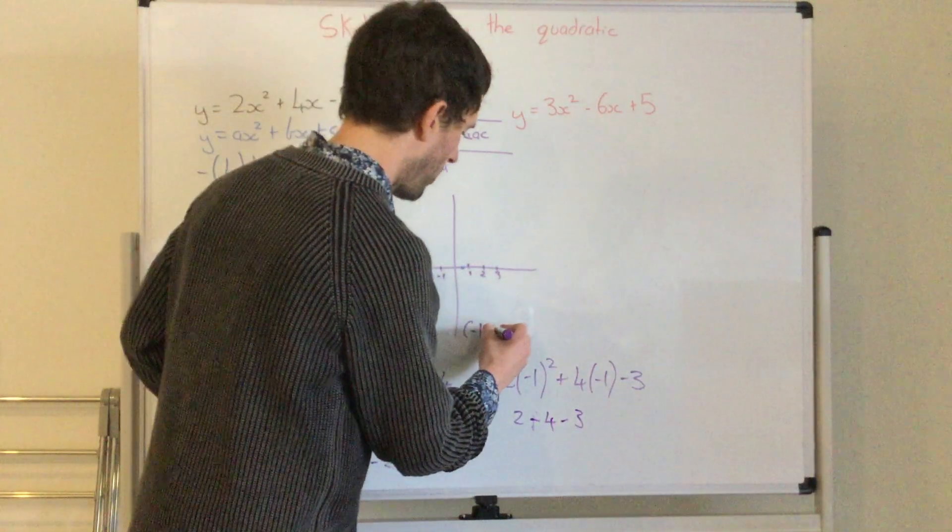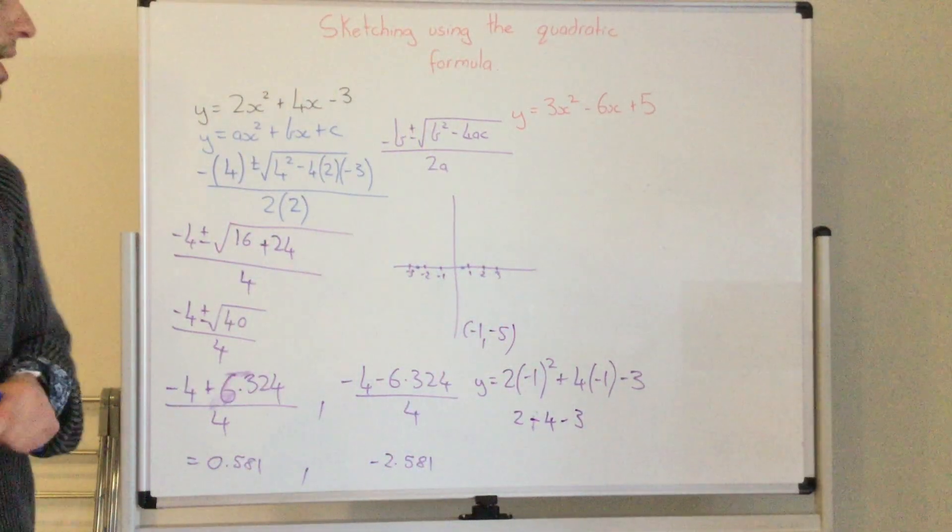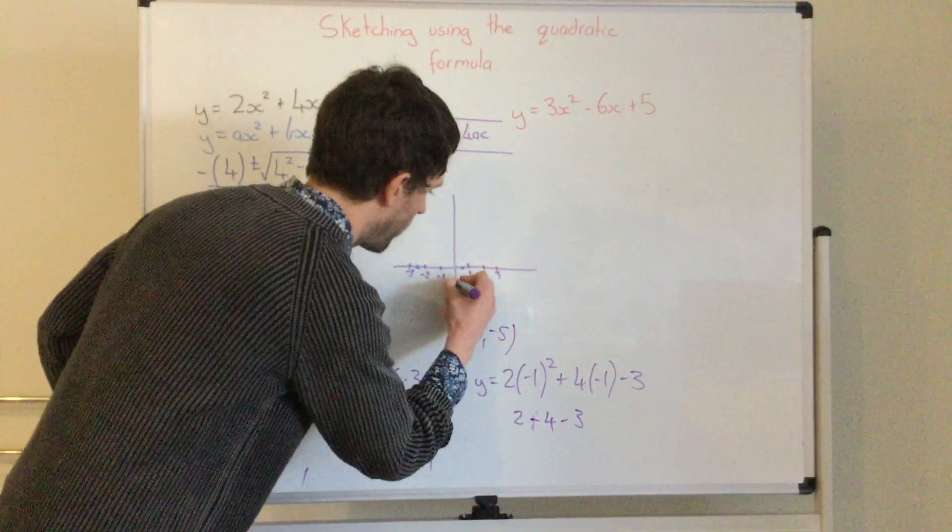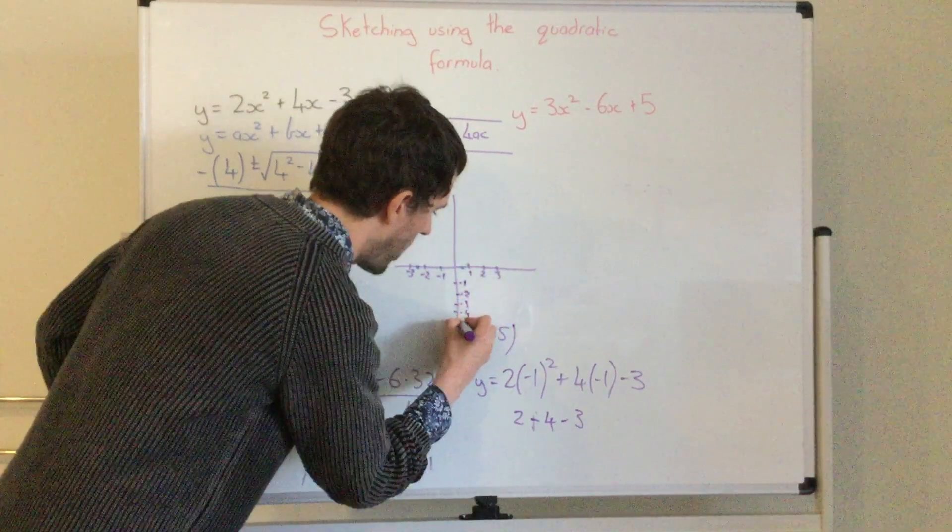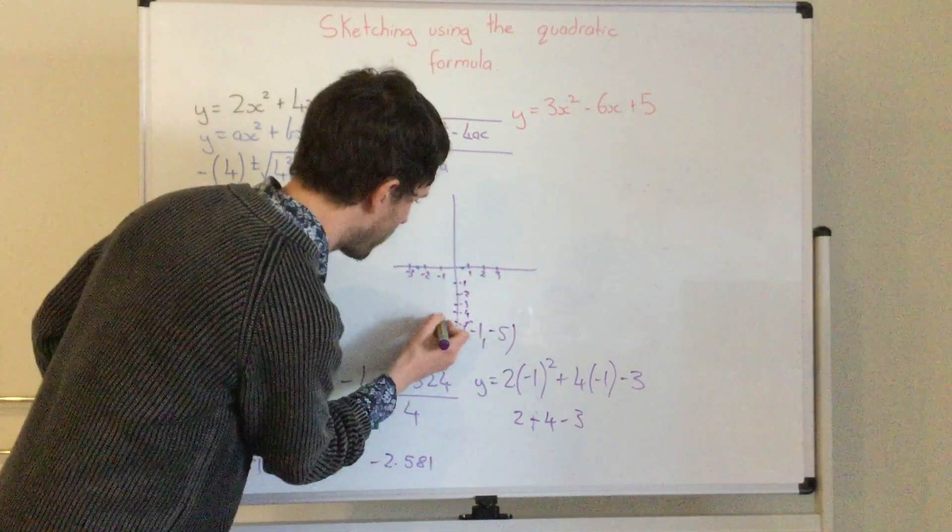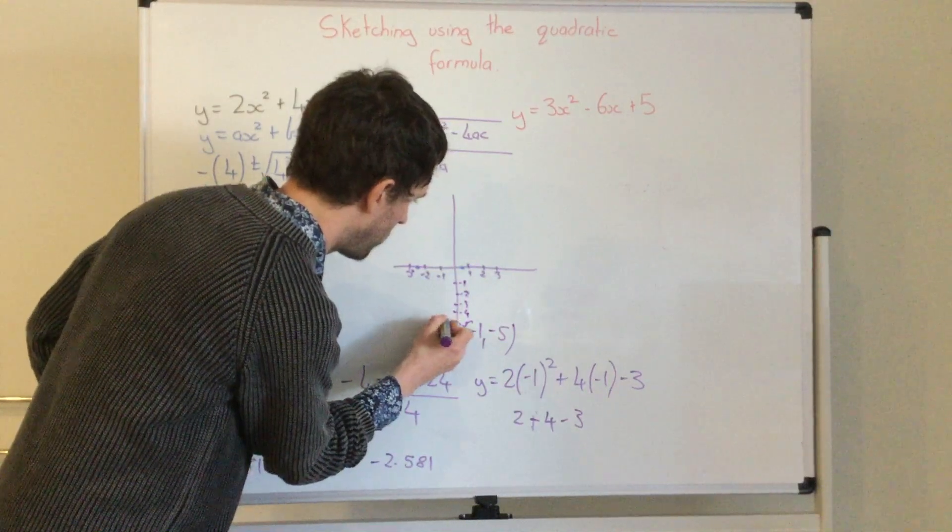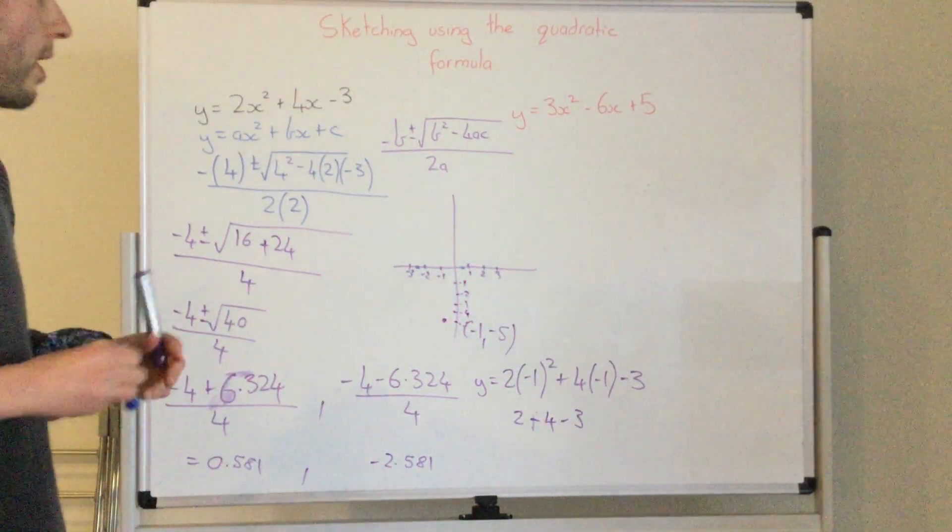So my turning point would be negative 1, negative 5. So negative 1, negative 2, negative 3, negative 4 and negative 5. So right here. Now I'm able to draw my graph.